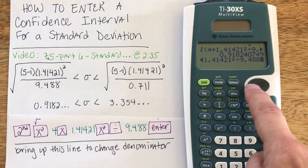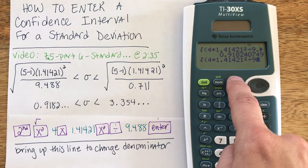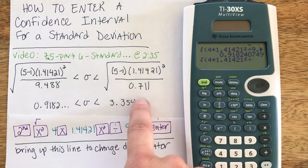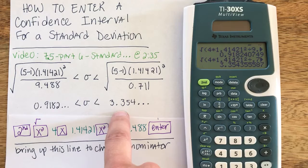Now what I'm going to do is hit delete to keep removing each portion of the denominator until I get to my division symbol, and now I can type the denominator of 0.711. I did not need the lead zero. Hit enter, and I get my upper bound of 3.35.